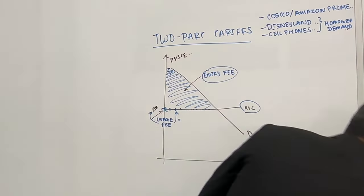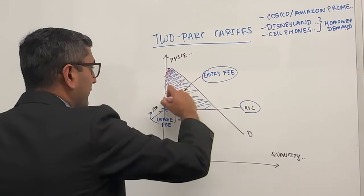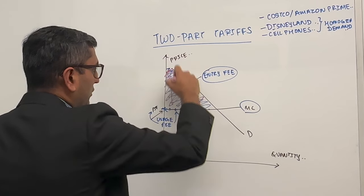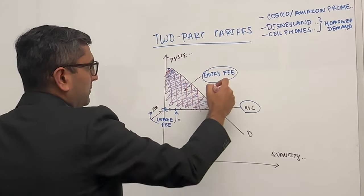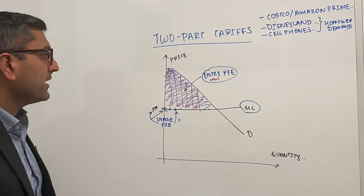So this blue area now becomes red. This becomes producer surplus completely for this one customer. Yes, it's no longer blue, it's red because you charge this as a fee. Consumer surplus is now a fee. And then usage fee, every time they increase the quantity, they'll pay you more.